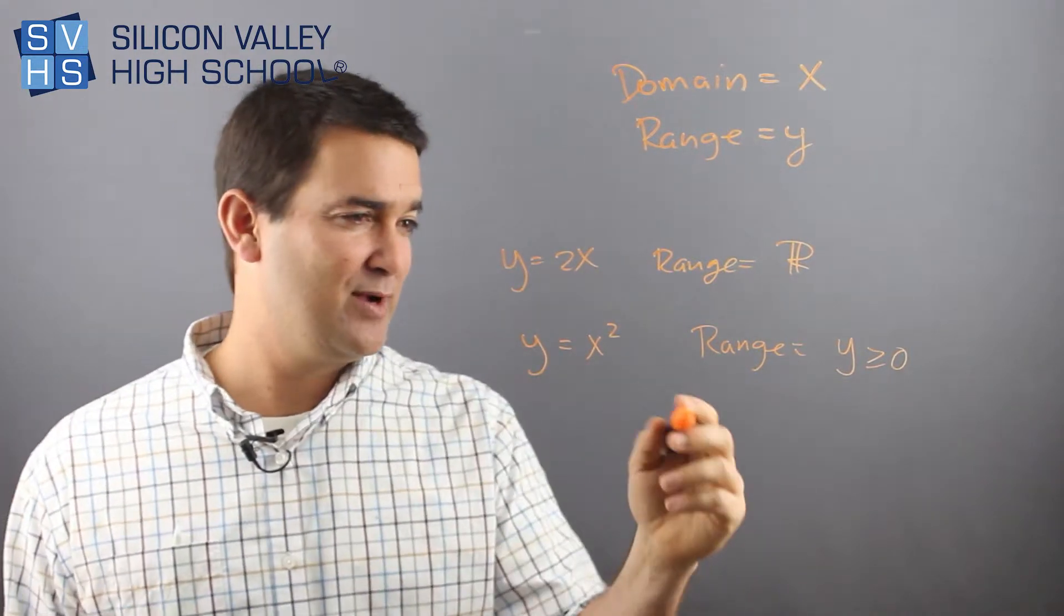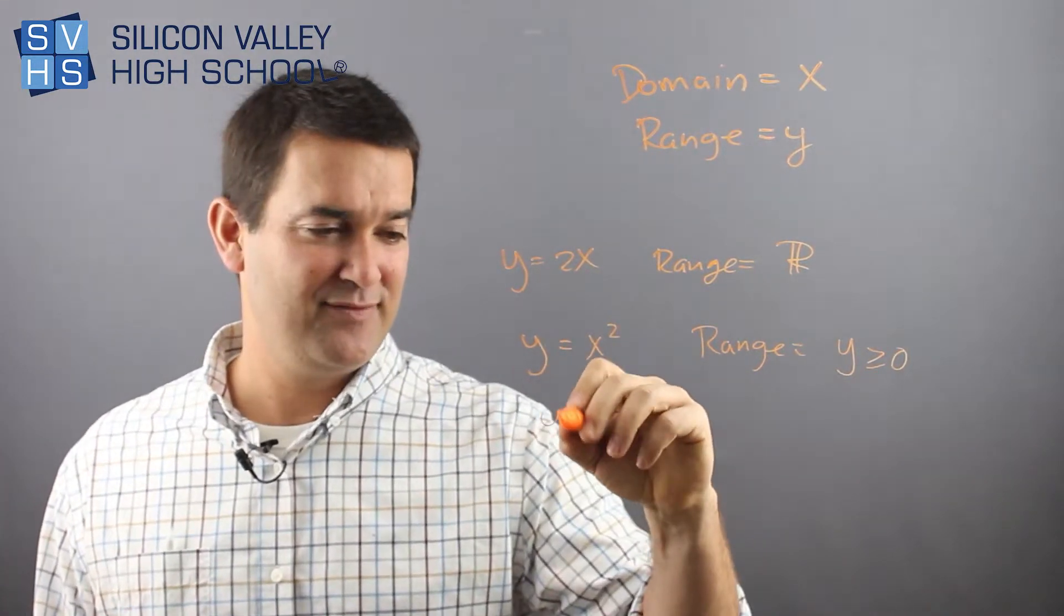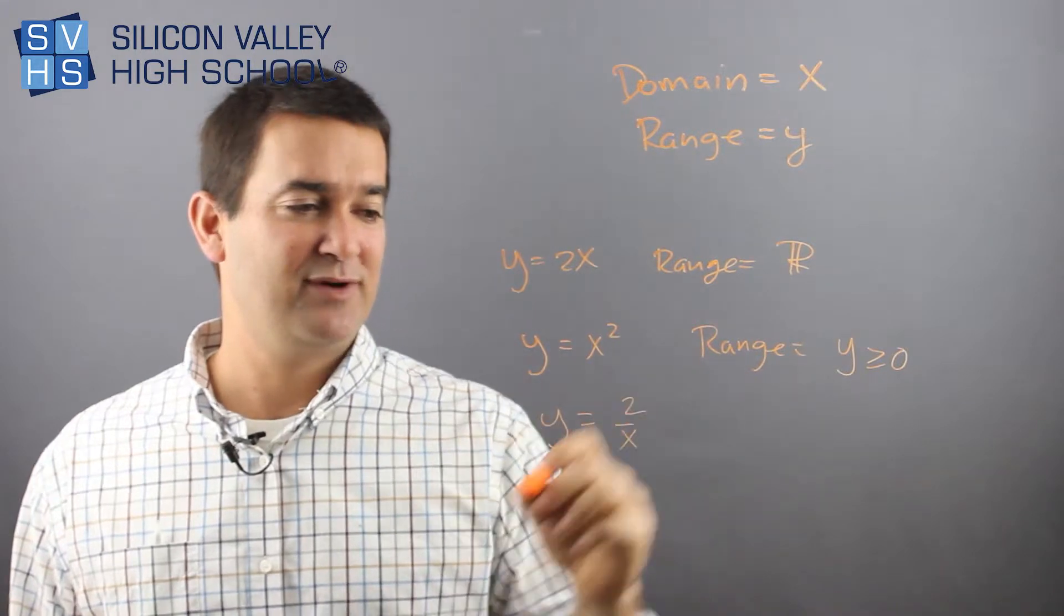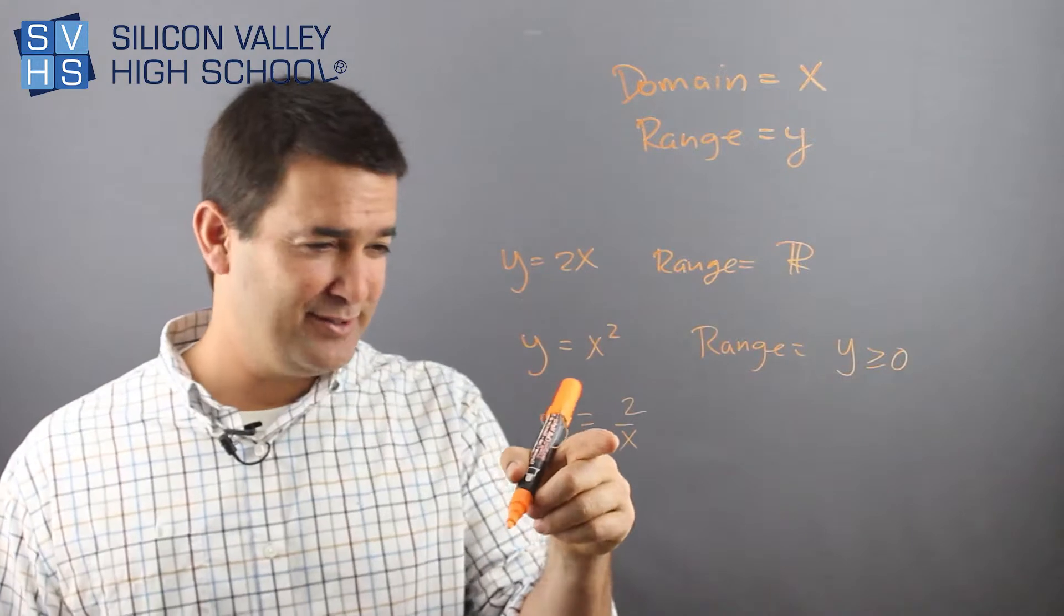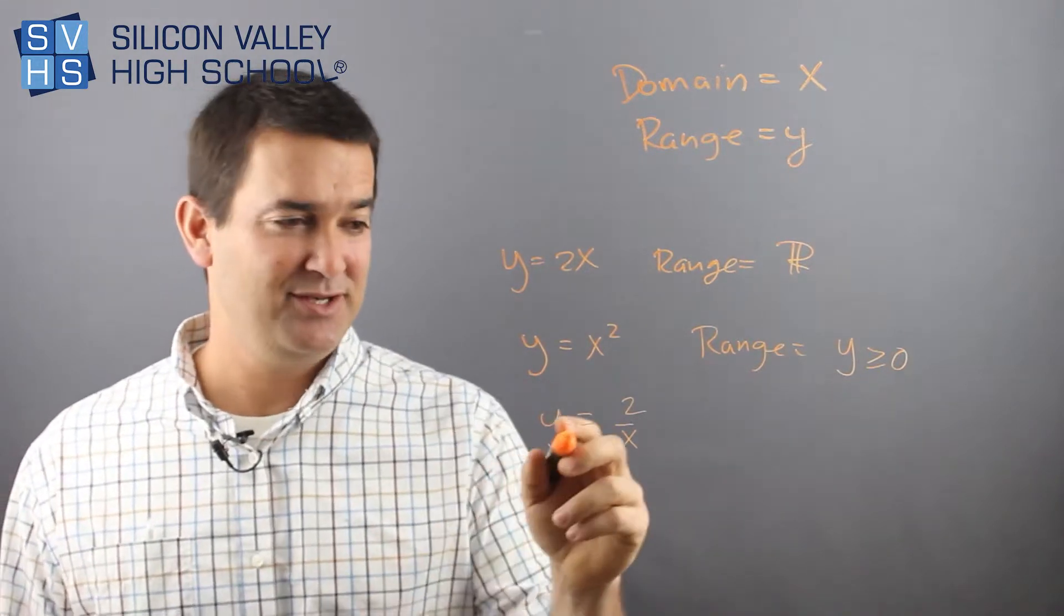I can think of a few other weird ones. Here's another one that kind of comes out weird if you had something like this. Y equals two over X.